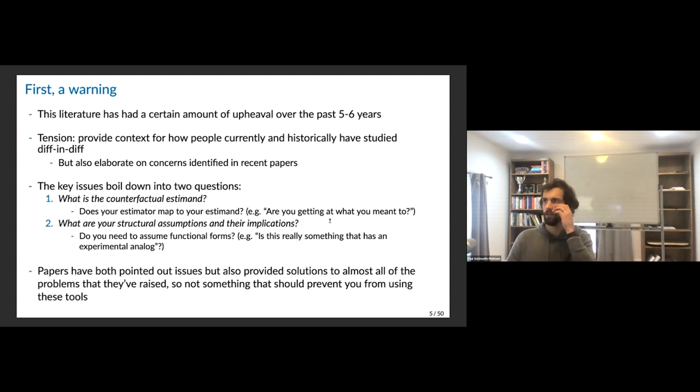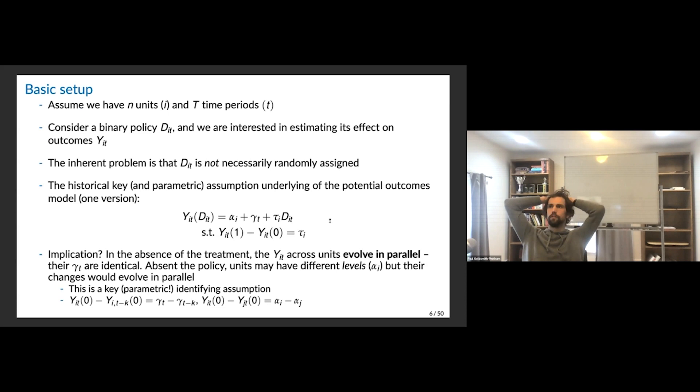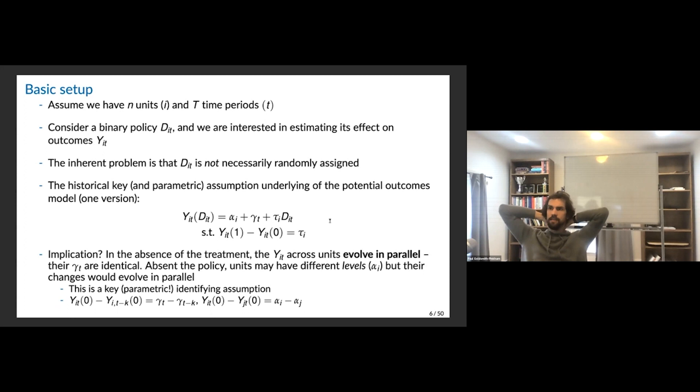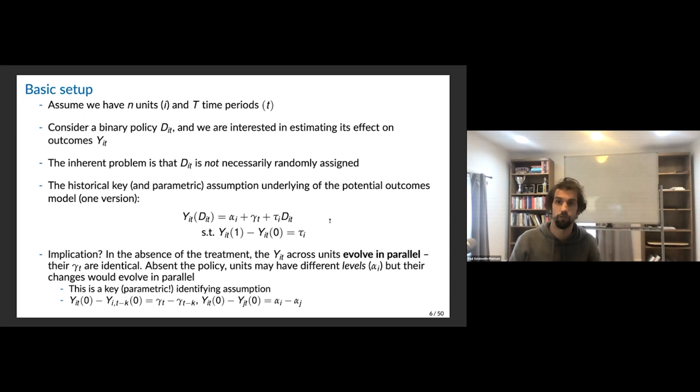Let's start with the basic setup. We're in a panel setting: we have N units indexed by i, with T time periods indexed by t. We have some binary policy D, and we're interested in its effect on some outcome Y_it. The inherent problem is that D isn't necessarily randomly assigned — the same problem we ran into with traditional cross-sectional estimation.